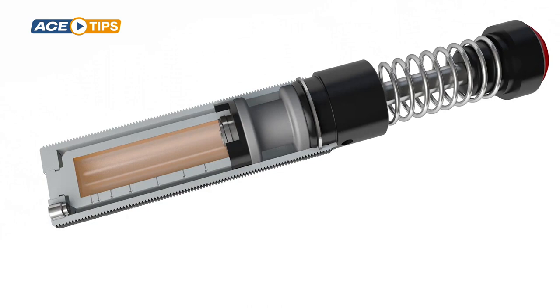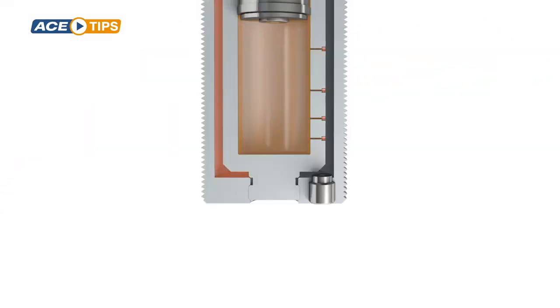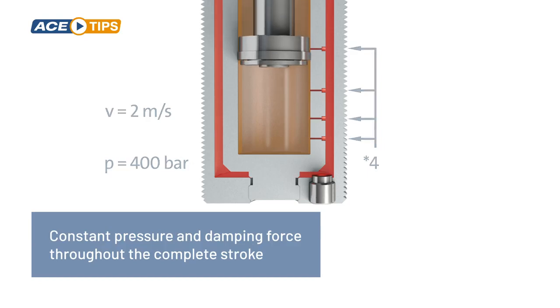The oil flows through a valve in the piston back into the pressure chamber. The metering orifices are arranged along the stroke so that the mass is retarded with a constant damping force.